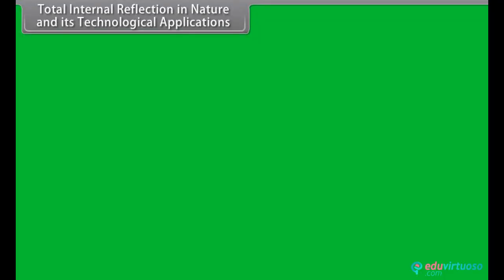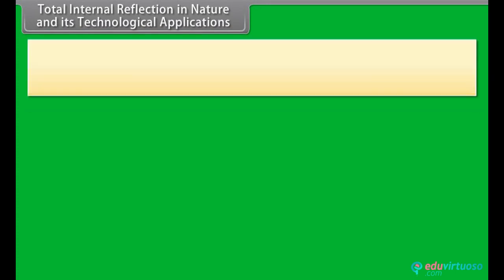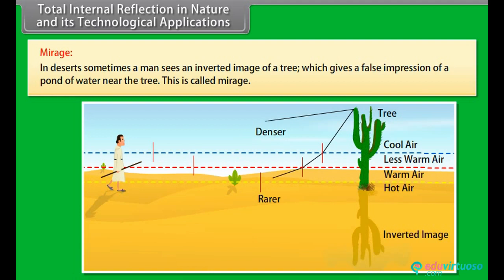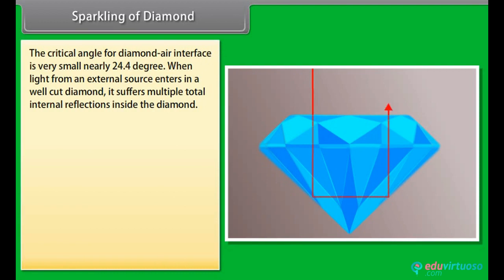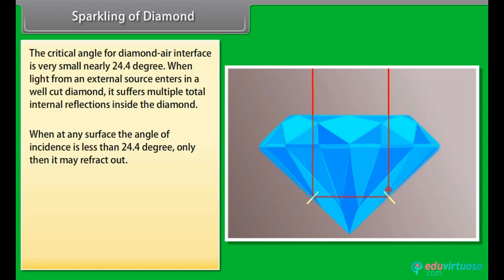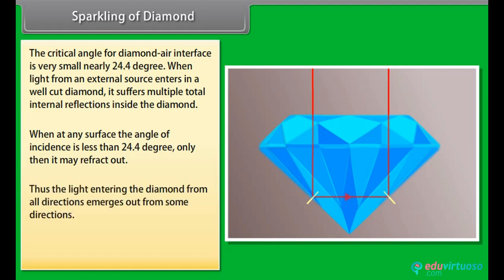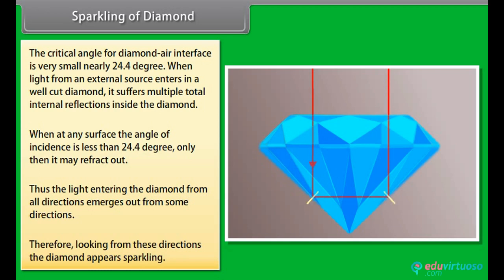Applications of total internal reflection — Mirage: In deserts, sometimes a person sees an inverted image of a tree, giving a false impression of a pond of water near the tree; this is called a mirage. Sparkling of Diamond: The critical angle for a diamond-air interface is very small, nearly 24.4 degrees. When light enters a well-cut diamond, it suffers multiple total internal reflections. Only when the angle of incidence at a surface is less than 24.4 degrees does light refract out, making the diamond appear sparkling from certain directions.